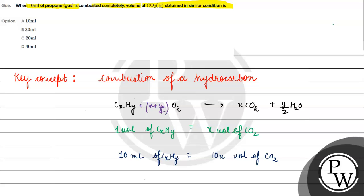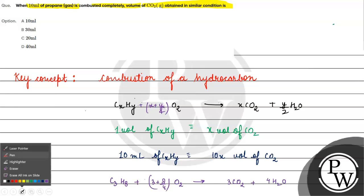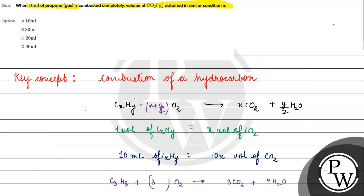Now look at this question, it says propane. Propane will come here: C3H8 plus 3 plus 8 by 4 moles of oxygen plus 3 CO2 plus 8 by 2. This is how much we have here, 3 plus 2, 5, so we have 5.